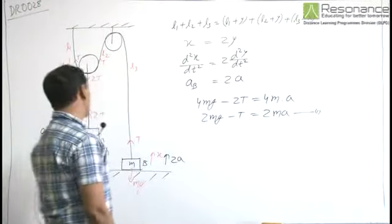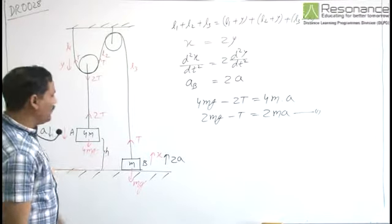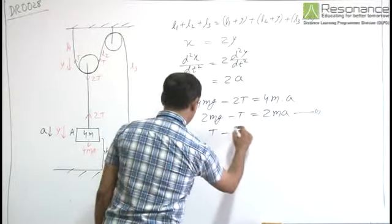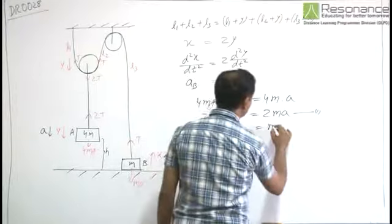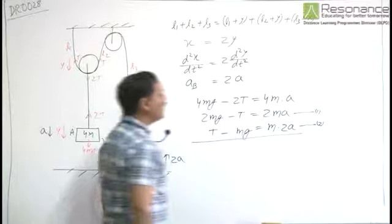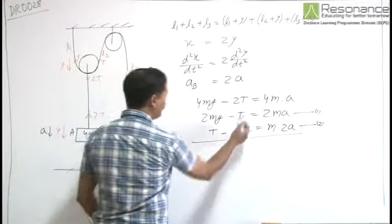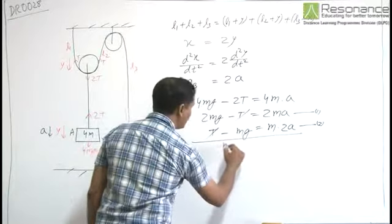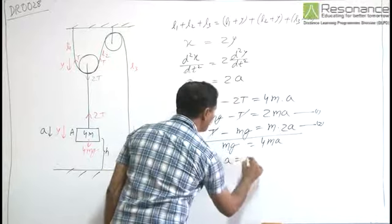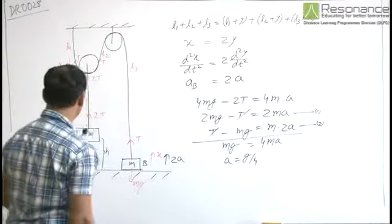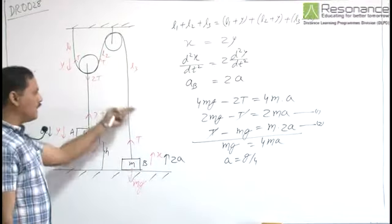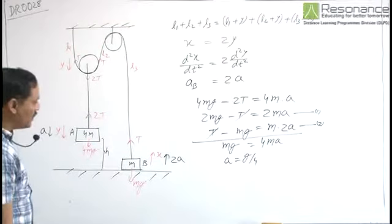For block B, we can write T minus mg is equal to m into 2a. This is for the second block. If we add them up, this T is cancelled. 2mg minus mg is equal to 4ma, or a is equal to g by 4. So A comes down with acceleration g by 4 and B moves up with acceleration 2g by 4 or g by 2.